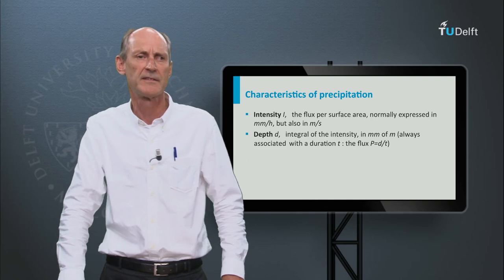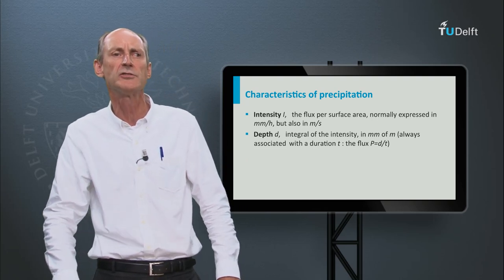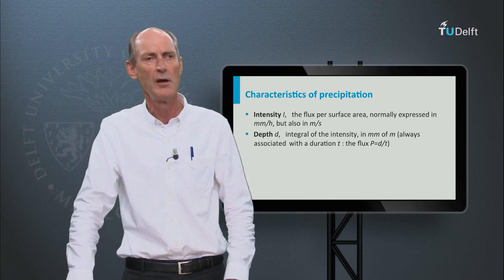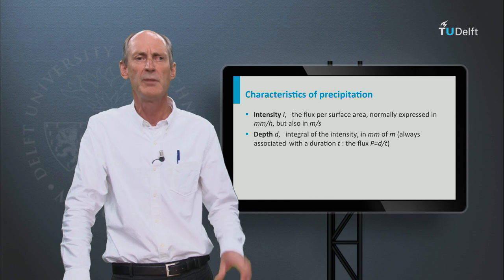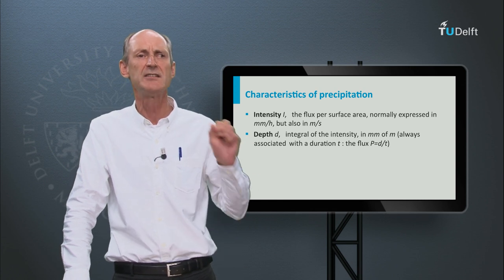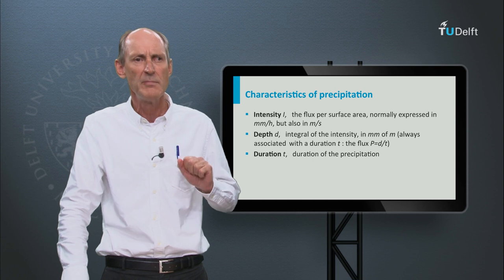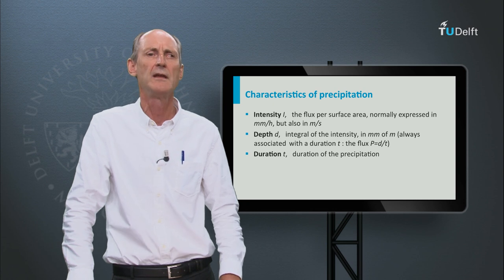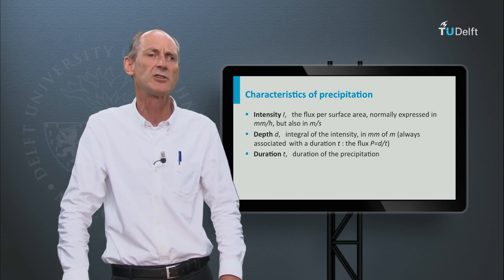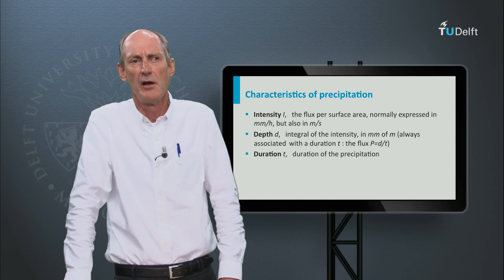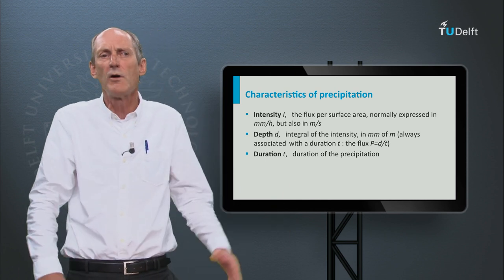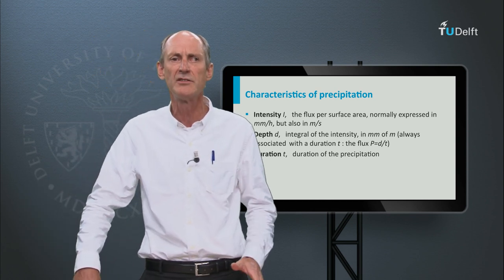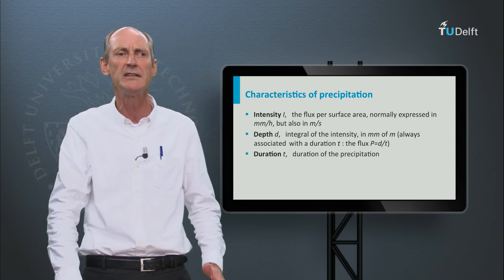Second is the depth. This is the integral of the intensity over a certain duration t. It is expressed as a length, for instance in millimetres. But be aware, this integral is meaningless without the duration, because precipitation is and remains a flux. Many people, even meteorological officers, make mistakes in this regard. For instance they say that the rainfall was 100 millimetres, but this is meaningless if you don't mention the time over which this 100 millimetres was accumulated.